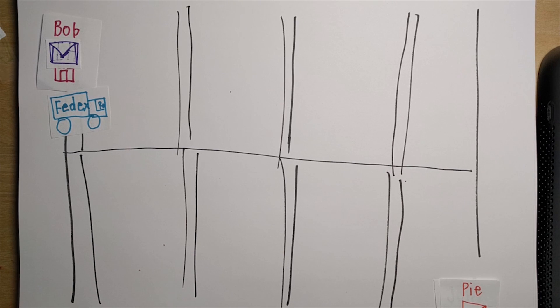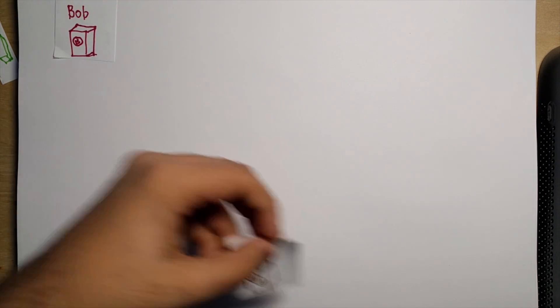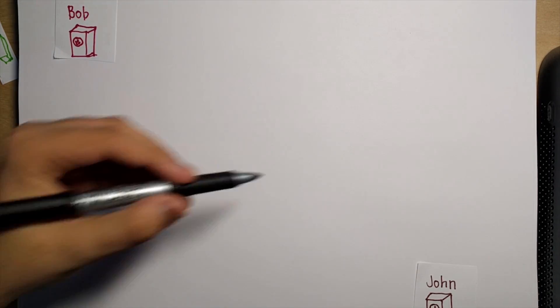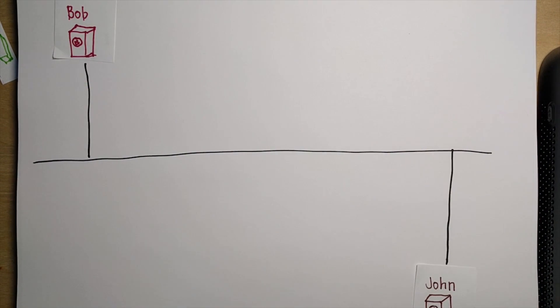That's in its essence how the internet works. Now, let's make this into real life. Bob has a computer, and John has a computer. Now instead of roads, we have wires in the ground.